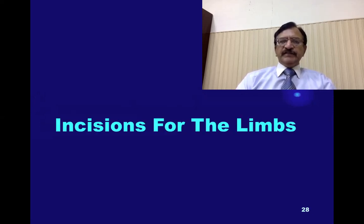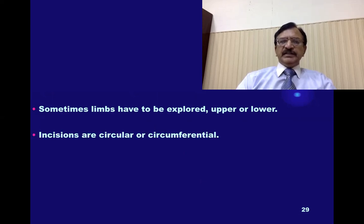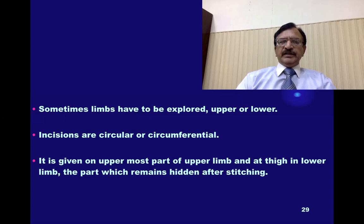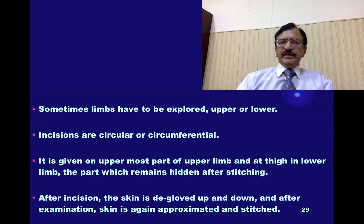Incisions for the limbs: sometimes it is necessary to explore the upper or lower limb. These incisions are circular or circumferential, given on the uppermost part of the upper limb and at the thigh in the lower limb — the part which remains hidden after stitching, so it is not visible. After the incisions, the skin is degloved up and down, and after examination the skin is again approximated and stitched.